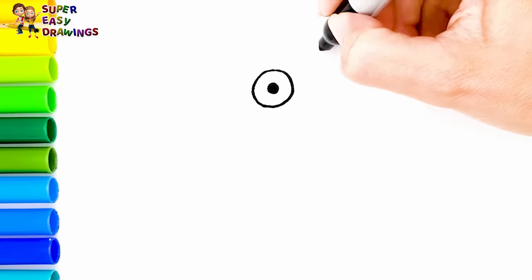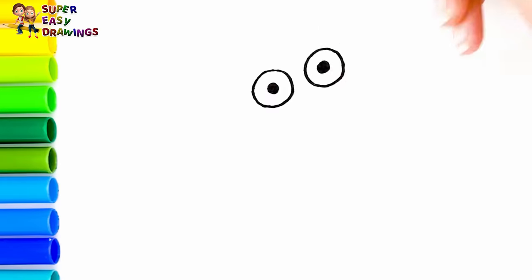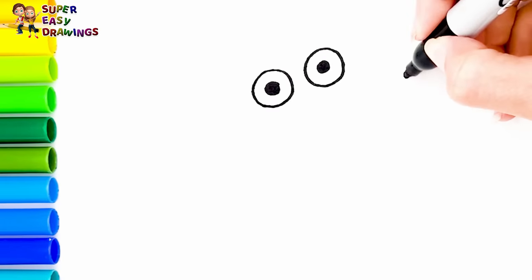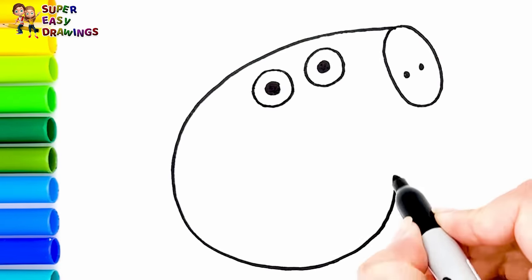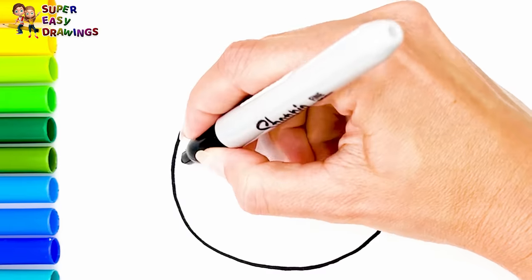To start, let's draw Peppa Pig. I start drawing her eyes. Then I draw her nose. The shape of her head, and a circle for her cheek.